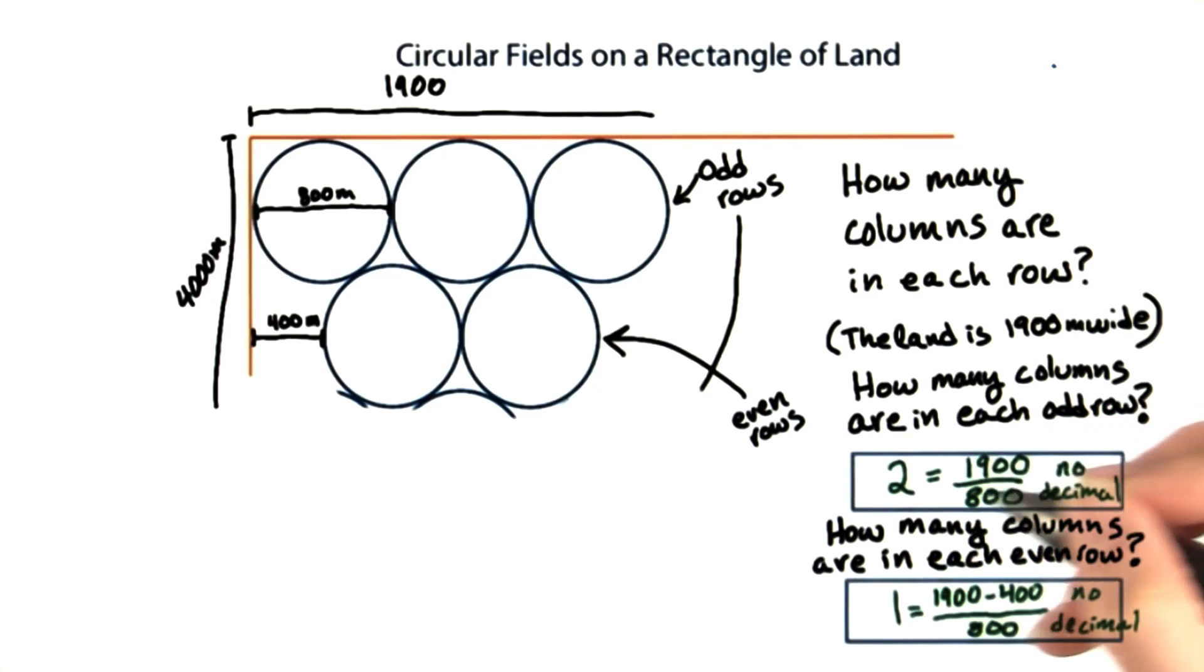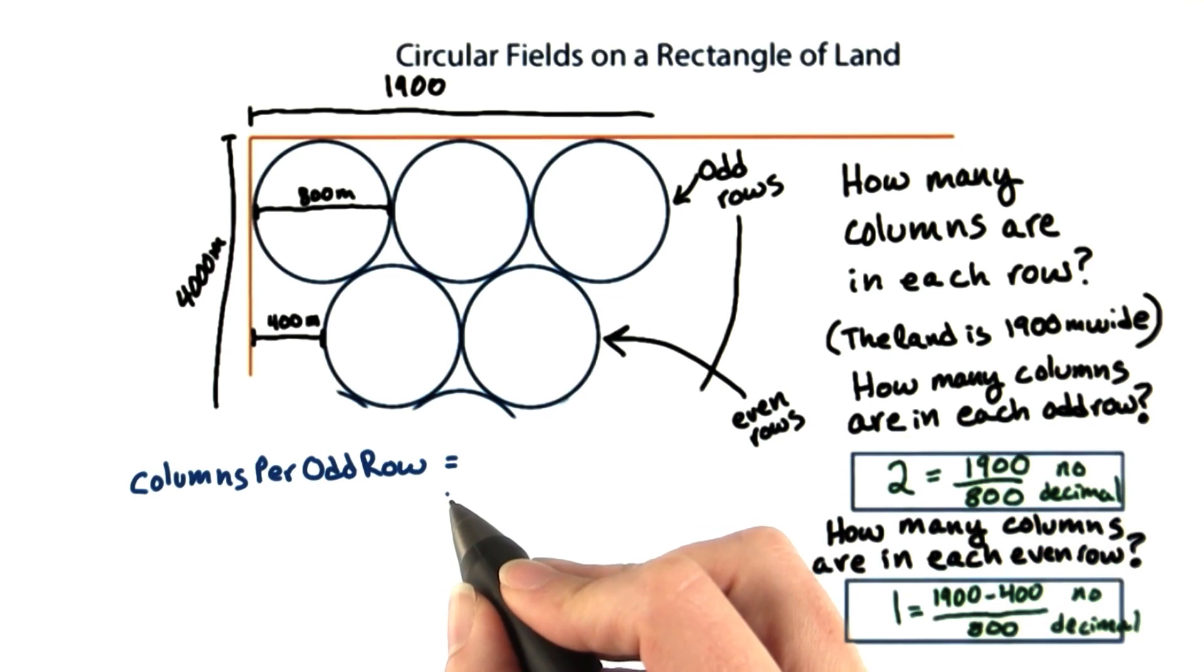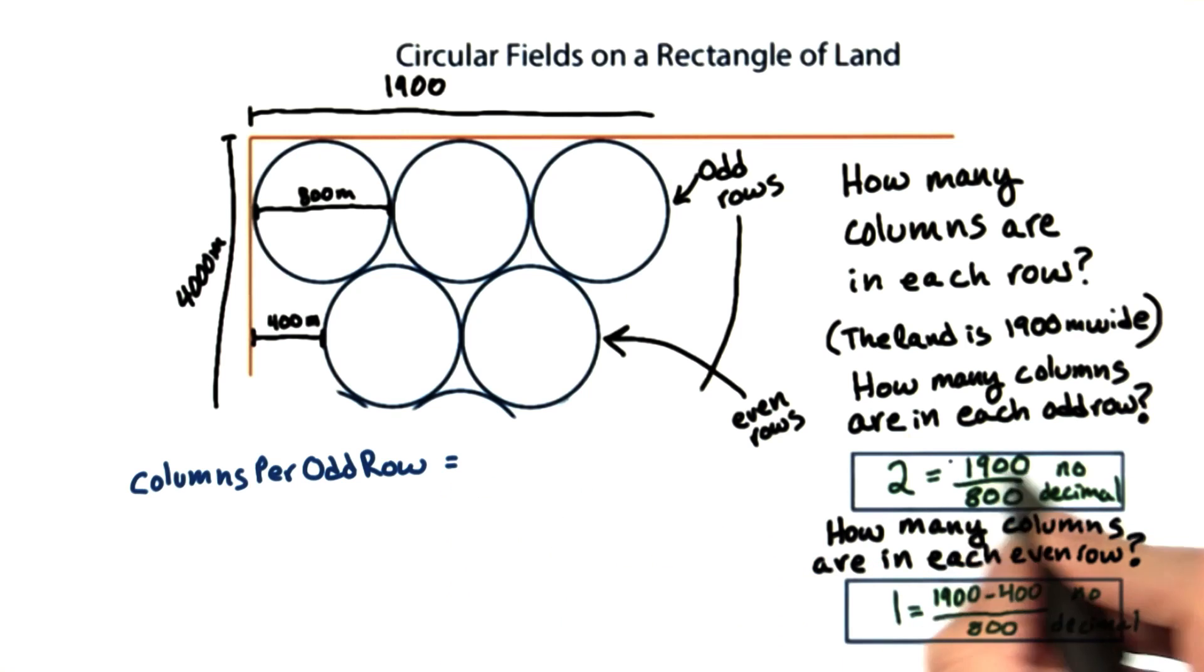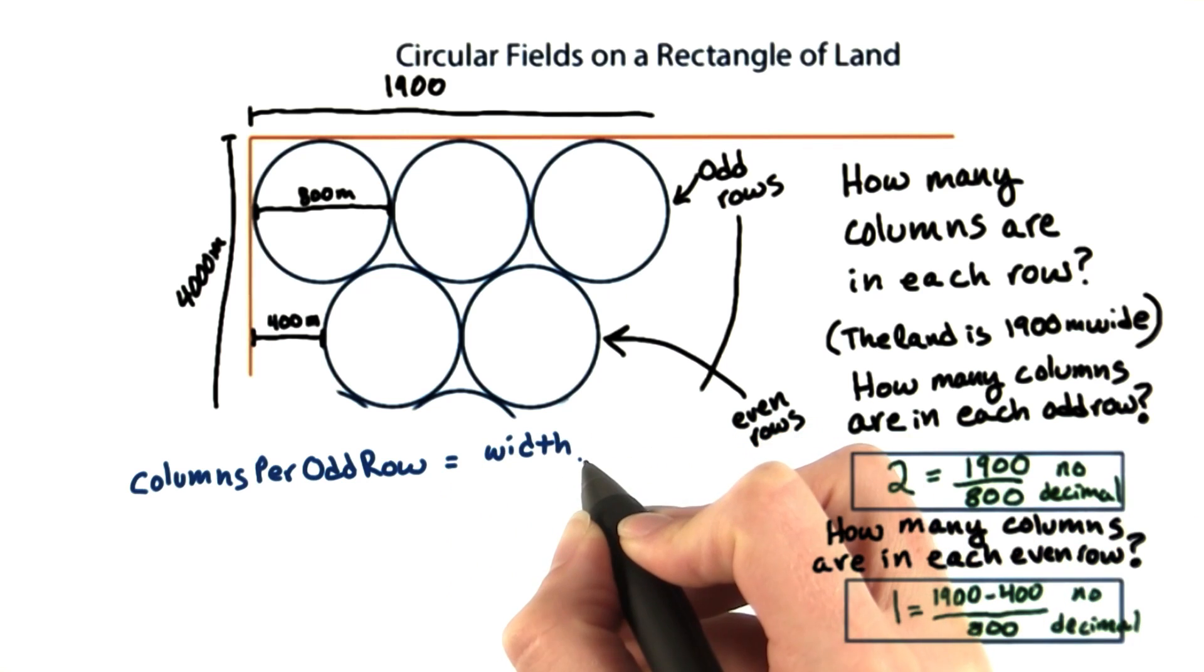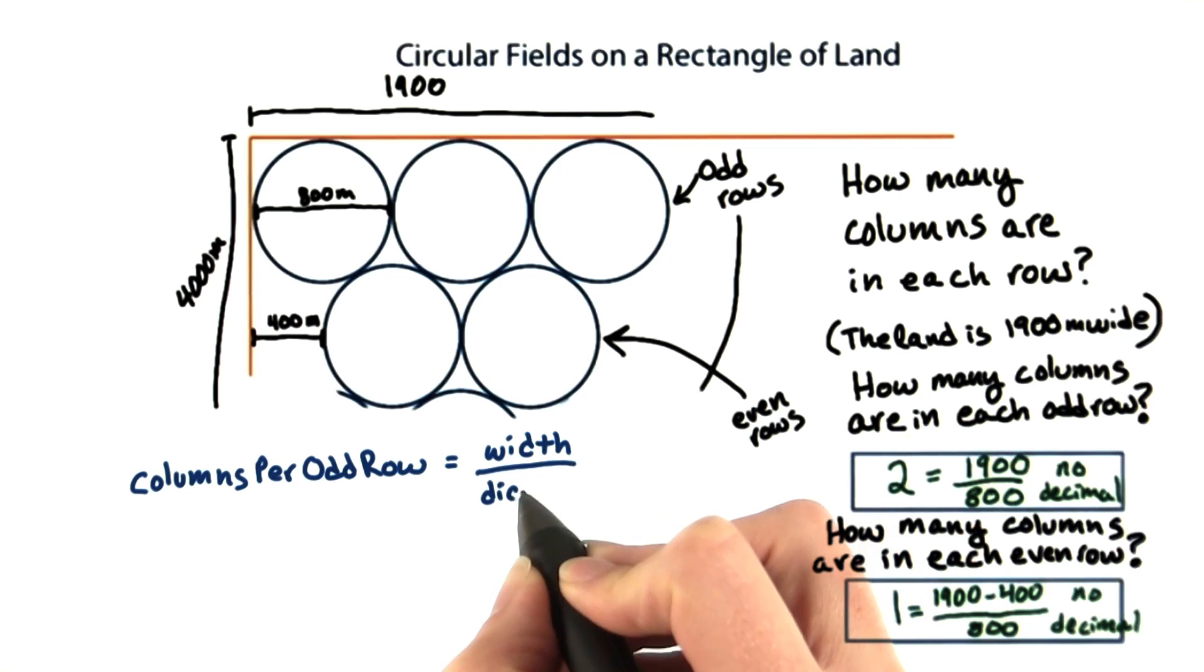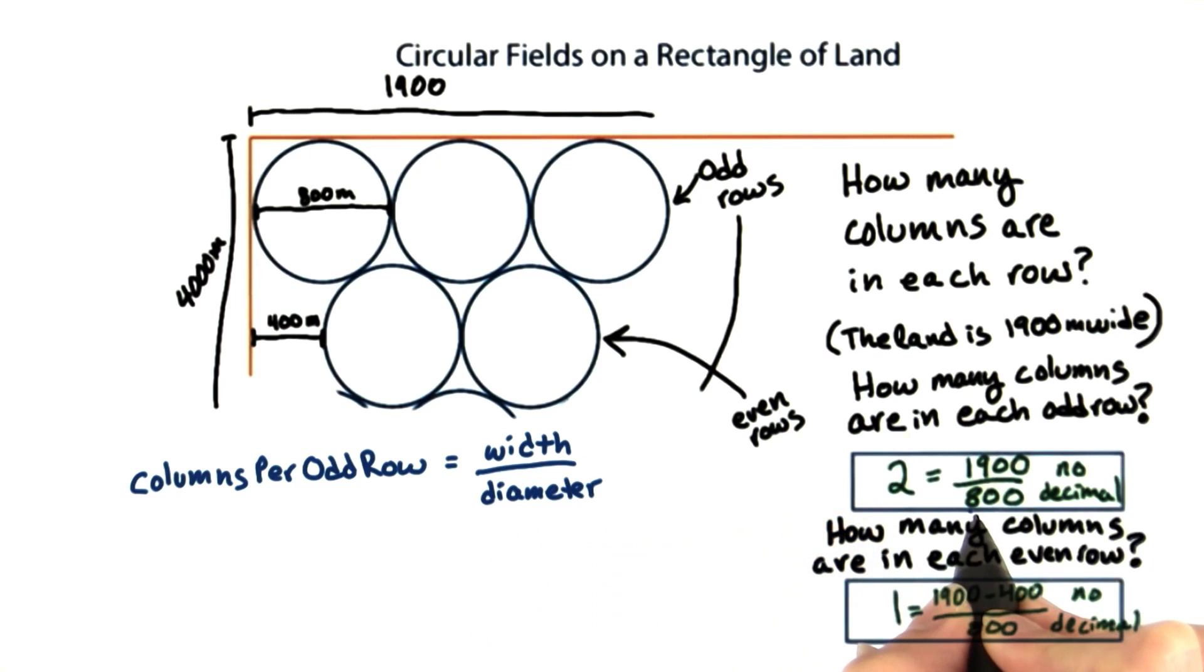Let's write an equation for this. Write it down and skip if you know the rest. To calculate the number of columns per odd row, we take the width, which is 1,900, divided by the diameter, which is 800, and then drop the decimal.